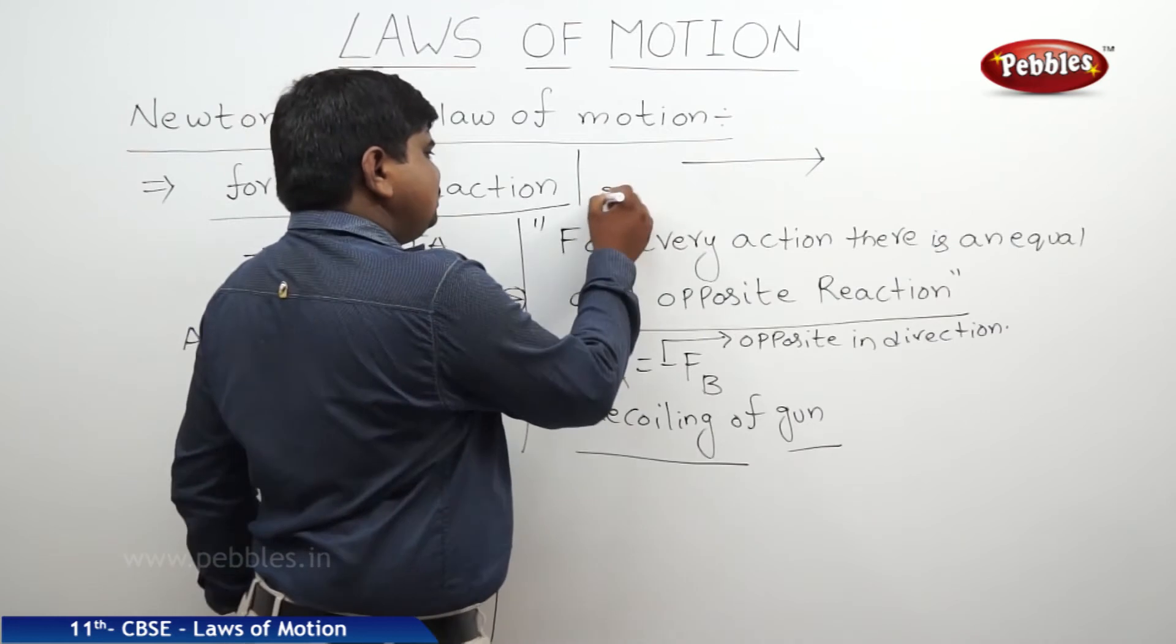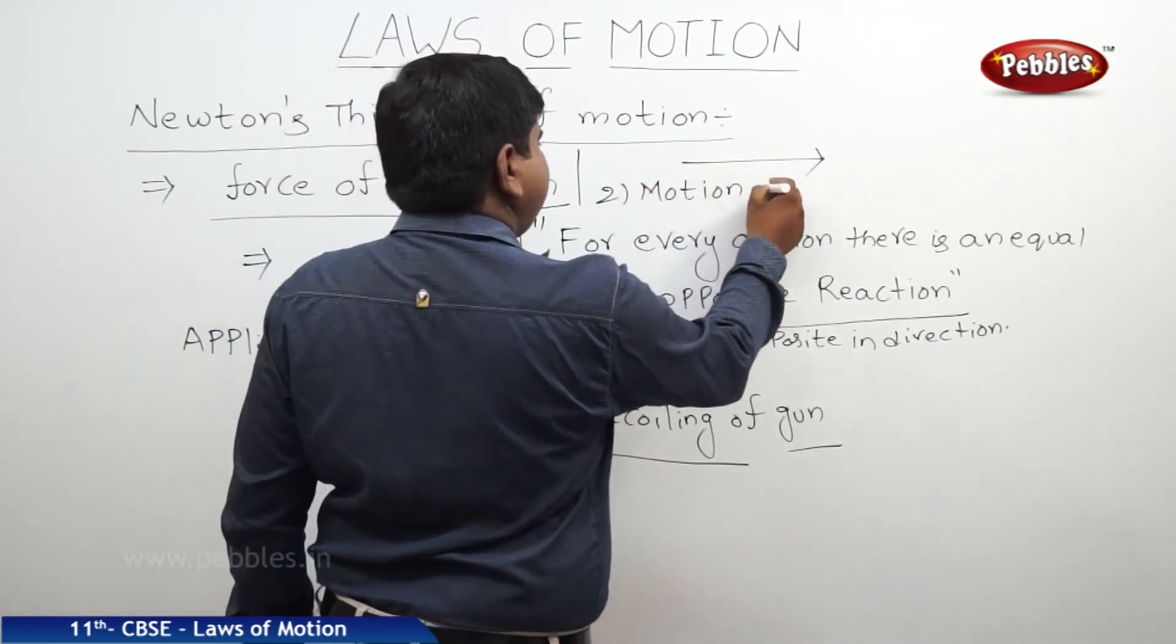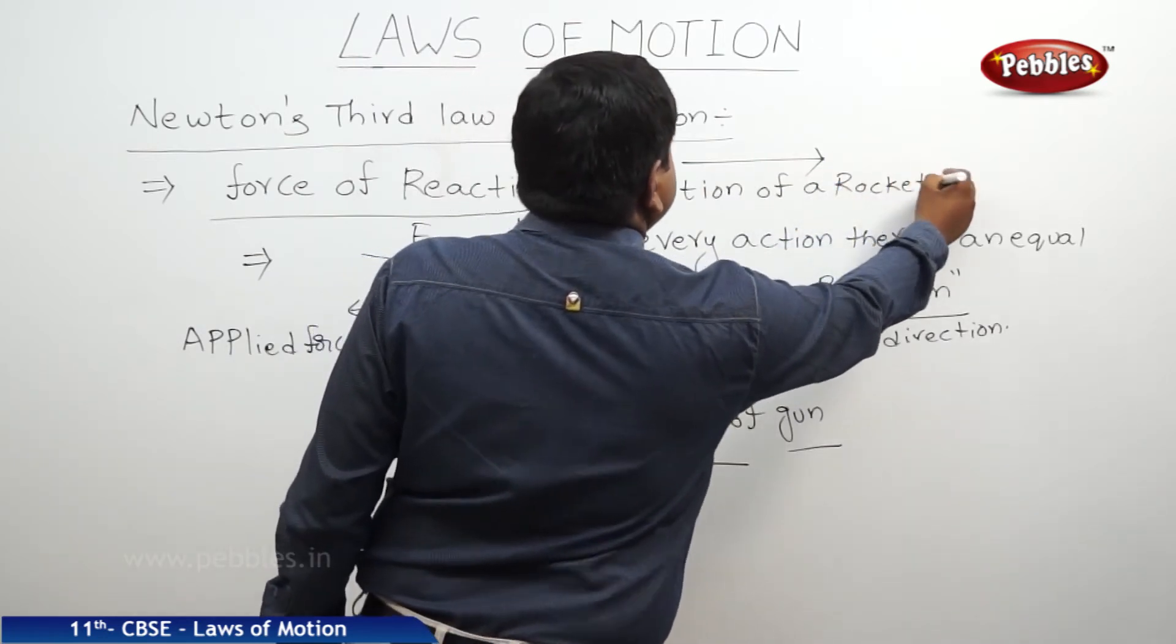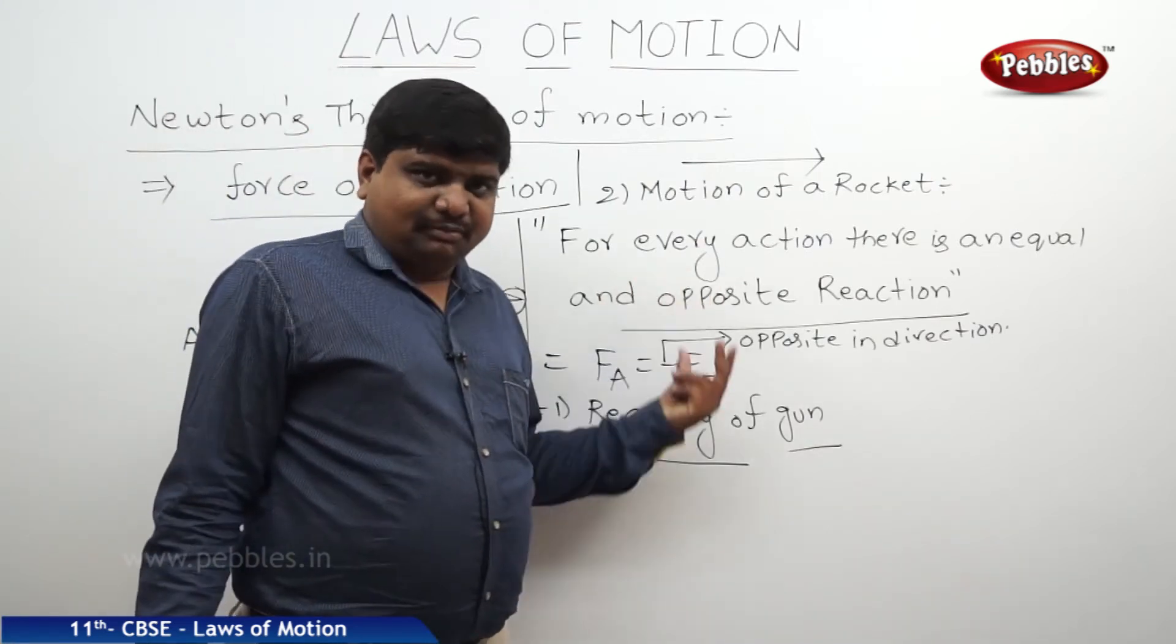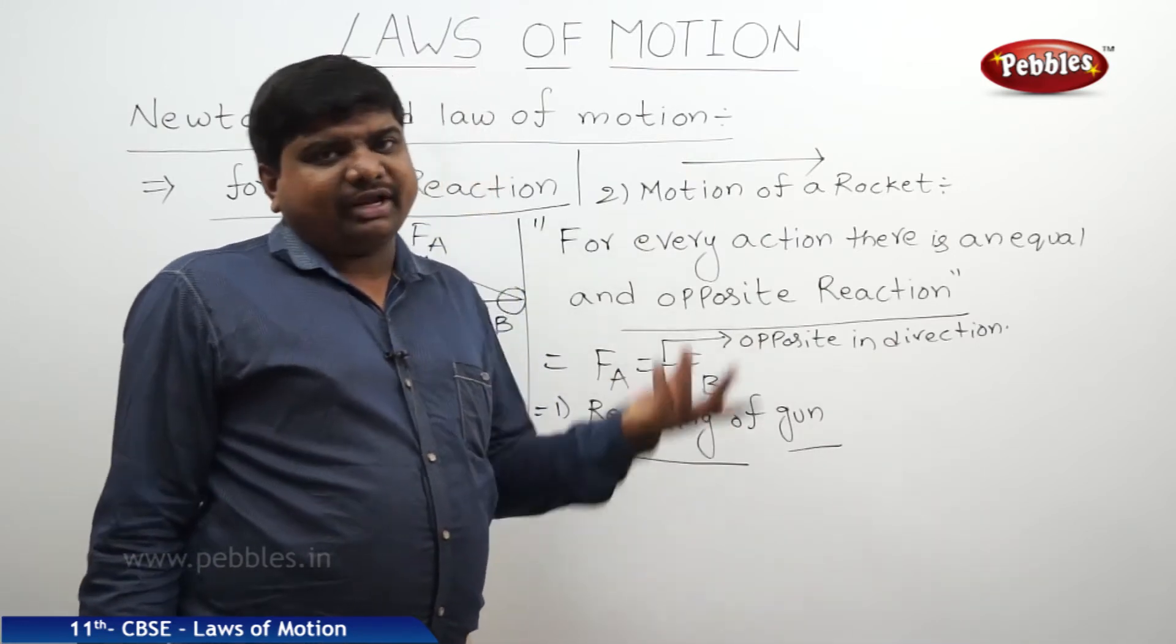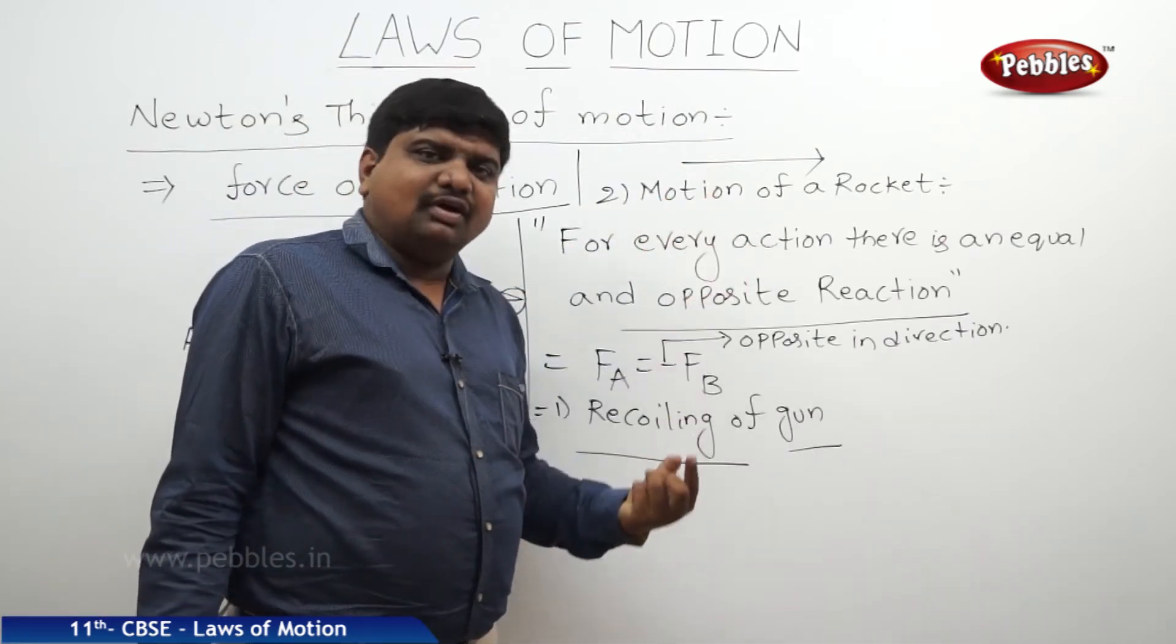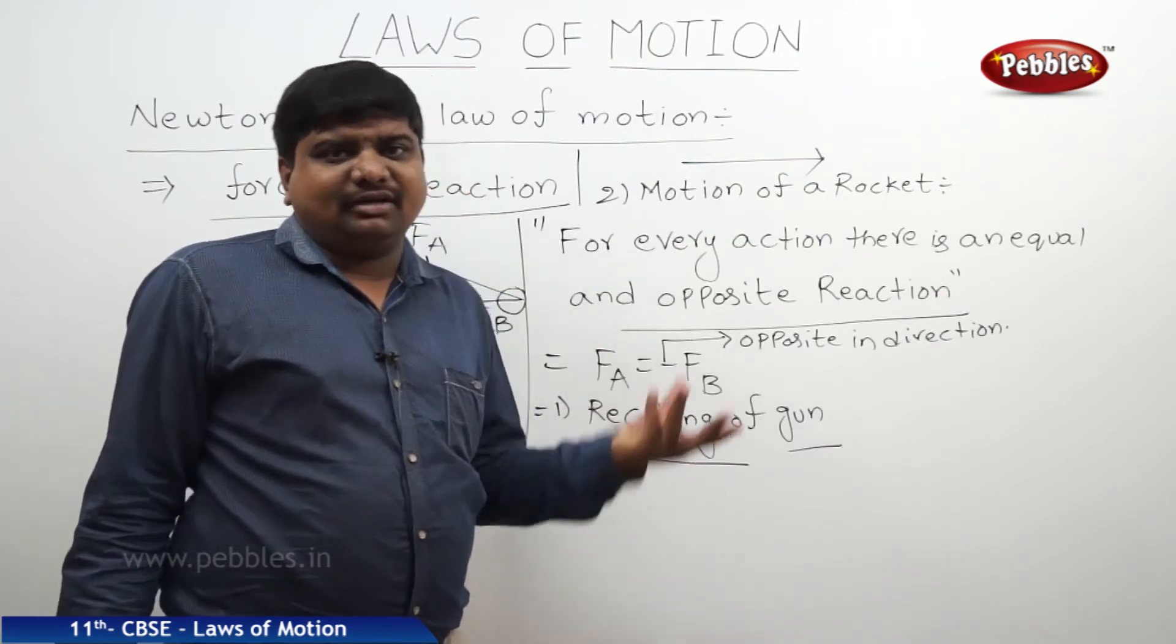Second example, motion of a rocket. If you see the rocket launching through the nozzle, the smoke will come out. The smoke which is colliding with the earth will give the sufficient force to move the rocket upwards. The amount of force which is in the downward direction is giving the required amount of force to move the rocket upwards.